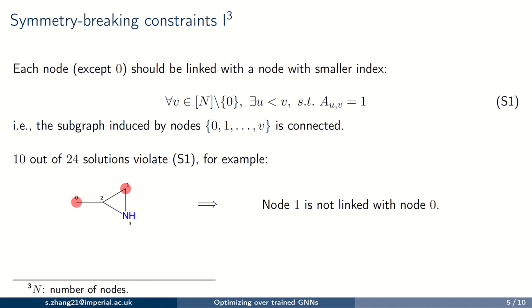To break symmetry in the search space, we propose the following symmetry breaking constraints. Constraints S1 force the connectivity of all subgraphs induced by the first V nodes. Ten solutions will be removed because of S1.